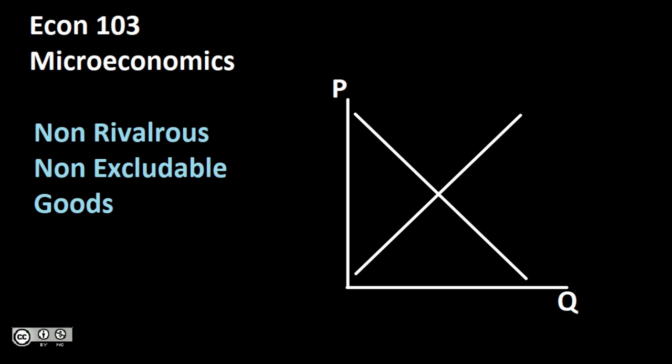In this video we're going to be taking a look at the presence of non-rivalrous, non-excludable goods and why they cause a market failure, and set up an example to see the problem that these end up bringing to society and the market.